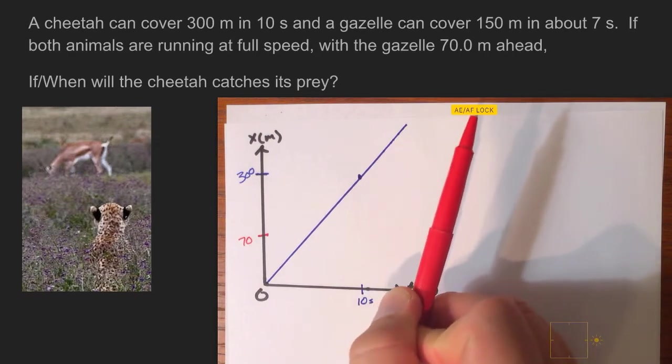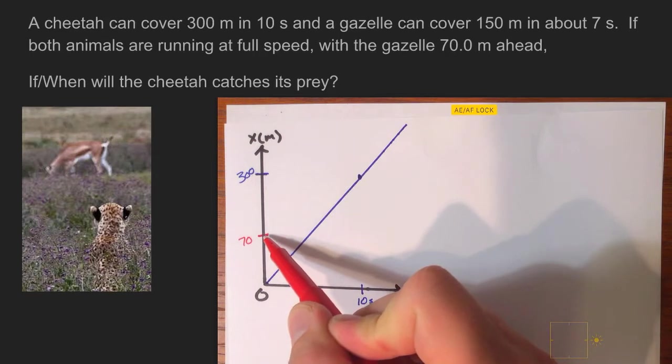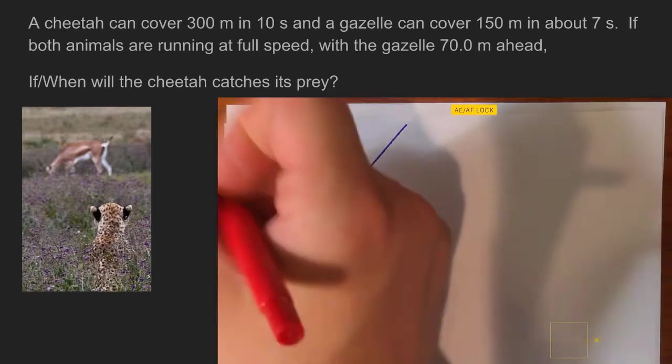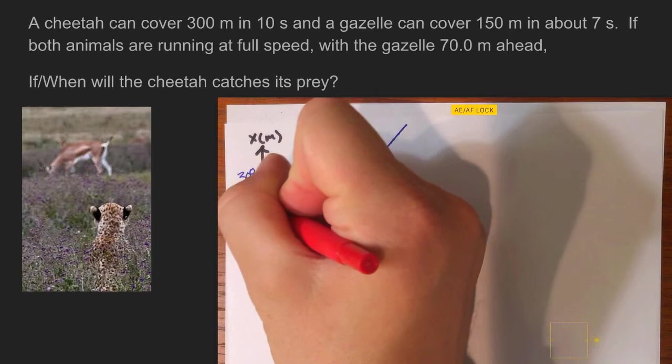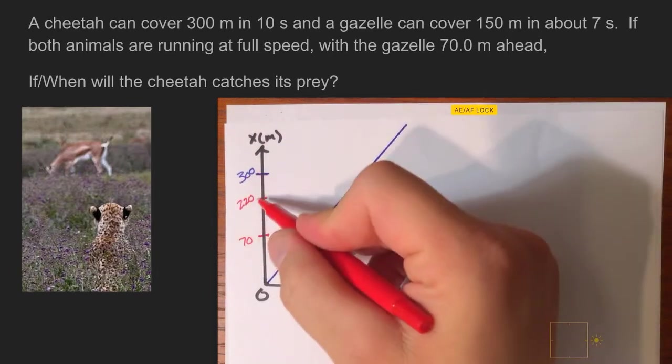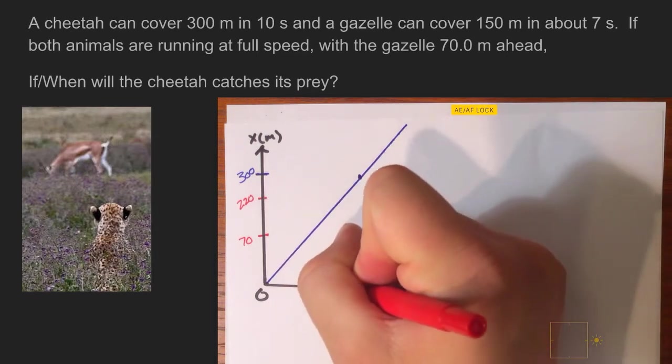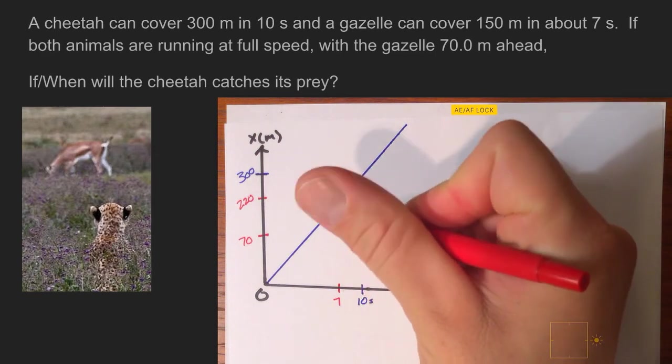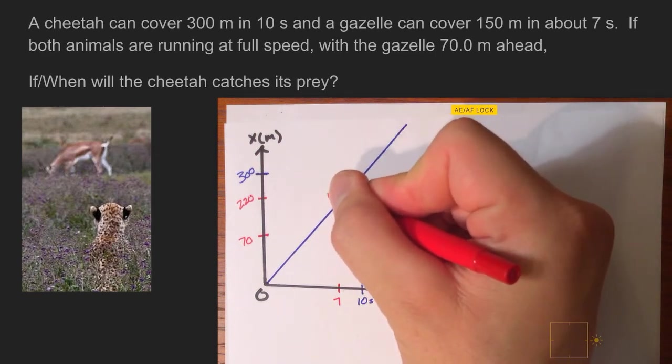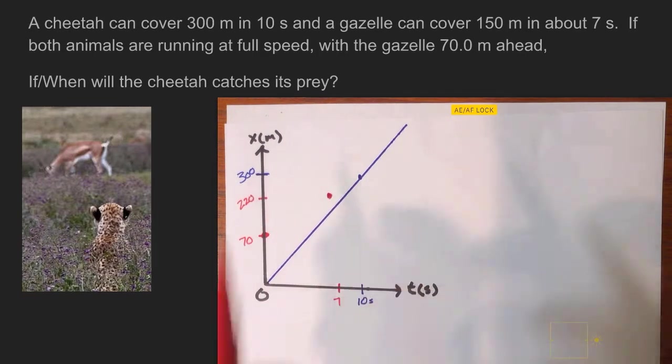Now looking at what the gazelle can do. The gazelle can cover 150 meters in seven seconds. What that means is the gazelle is going to be able to change his position of 70 meters by 150 meters. Or, if you're following along at home, 70 plus 150 would be 220 meters. We know that's where the gazelle is going to be with the information they gave us at seven seconds. So they both started running at the same time, but we know that the gazelle is only going to take seven seconds, and now they're going to be at a position of 220 meters.